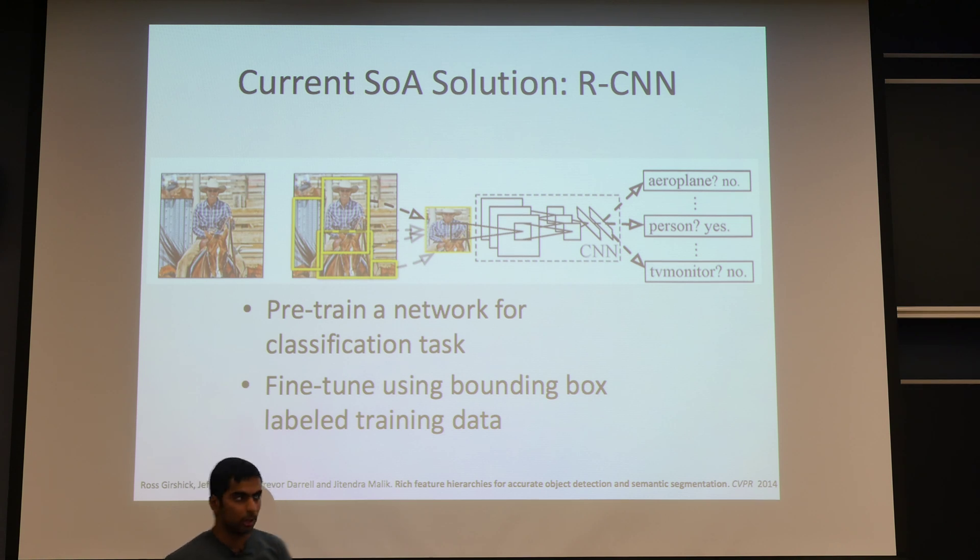The current state of the art in this task is what's called region CNN or R-CNN, and what that basically means is we take multiple object proposals from the given image and we extract CNN features from them, and then train an SVM over it so that at test time we can classify every box as what object is present in it or if it's background. The typical way this is done is we pre-train the network for a larger classification task for which a lot of data is available, and then you fine-tune the network for the specific object detection task using the bounding box labeled data that we have.